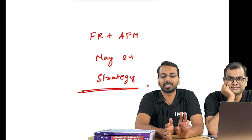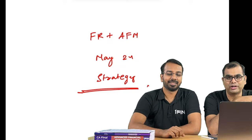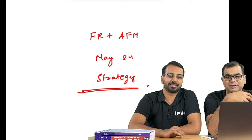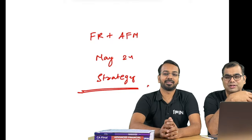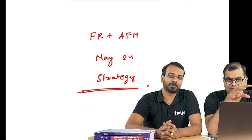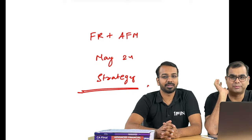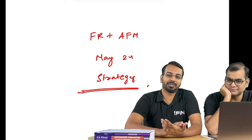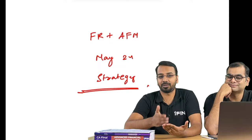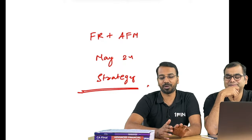FR and AFM are the first two papers. In November 23, FR was a slightly tougher paper, which affected many students' confidence. Some people didn't attempt subsequent papers well. First group results are also bad. It is very important that you do FR and AFM papers well and are confident about those two papers. What happened was many students thought FR went bad and then didn't attempt SFM or audit well. Later they realized FR actually they passed because everyone's paper had gone bad.